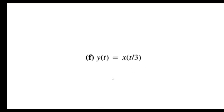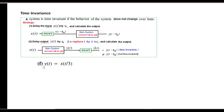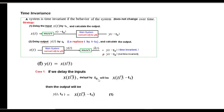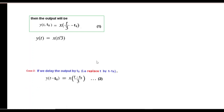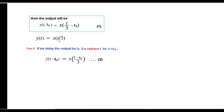Part (f) is y(t) = x(t/3). Delaying x(t) by t0 means x(t/3) becomes x(t/3 - t0), giving our first equation output. For the second equation, we replace t by t-t0, so x(t/3) becomes x((t-t0)/3). Comparing equation 1 and equation 2, there is a visible difference between x(t/3 - t0) and x((t-t0)/3). Therefore the system is not time invariant.